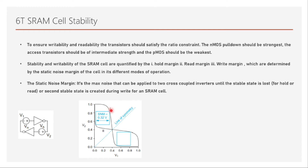As Vn becomes larger, the static noise margin continues to shrink. If Vn becomes very large, the stable state where V1 is zero may no longer exist, because V1 effectively becomes V1 plus Vn. One stable state is lost, which means the bit will be flipped. This is how static noise impacts the stable state in hold margin.